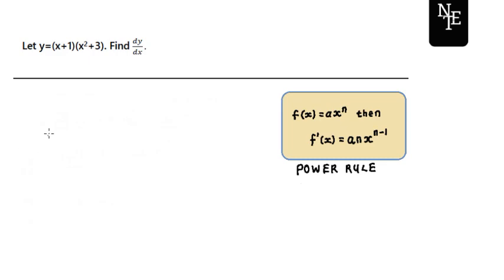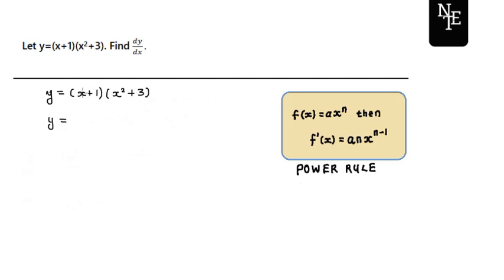We are given y is equal to x plus 1 times x squared plus 3 — sorry — so now we can just distribute this out. Notice that the notation is still y, because we are still just simplifying our function. So you're going to have x times x squared, which is going to be x cubed, then you're going to have plus 3x, and then plus x squared, and lastly plus 3.